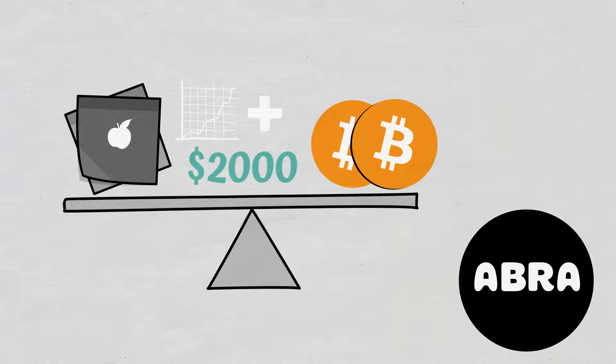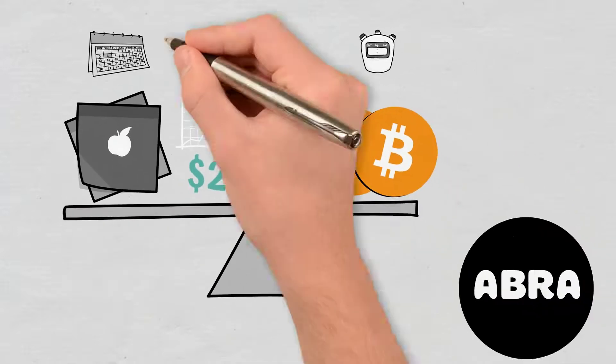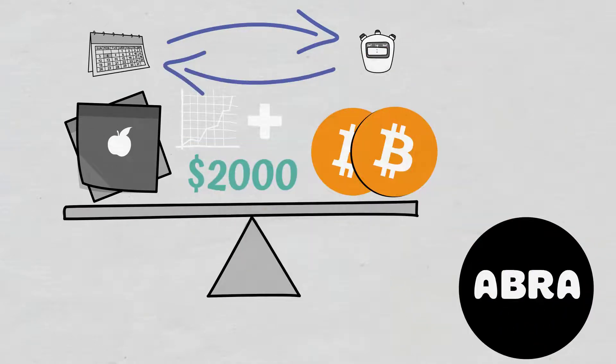Basically, it would result in a short position on Bitcoin but with a long one on Apple which represents the hedged asset. At the same time, Abra would have a long position on Bitcoin and the short one on Apple.